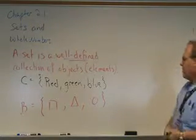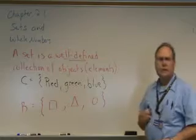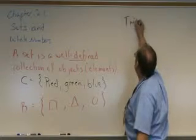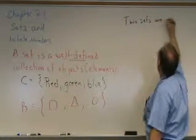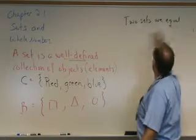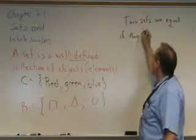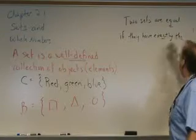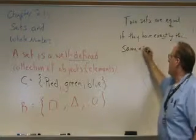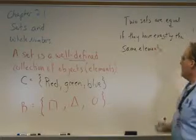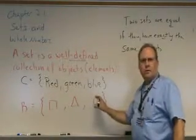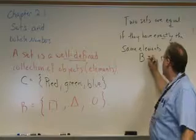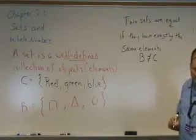B and C are two different sets. Now, we say that two sets are equal if they have exactly the same elements. These sets are not equal, so we would have to say here that B is not equal to C.